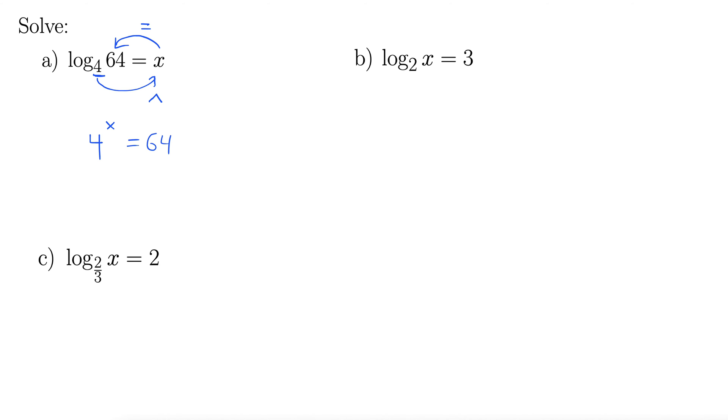And then we can answer that question. 4 to the x equals 64, so what is x? Well, 4 squared is 16, 4 cubed is indeed 64. So x must be 3, that solves the equation.